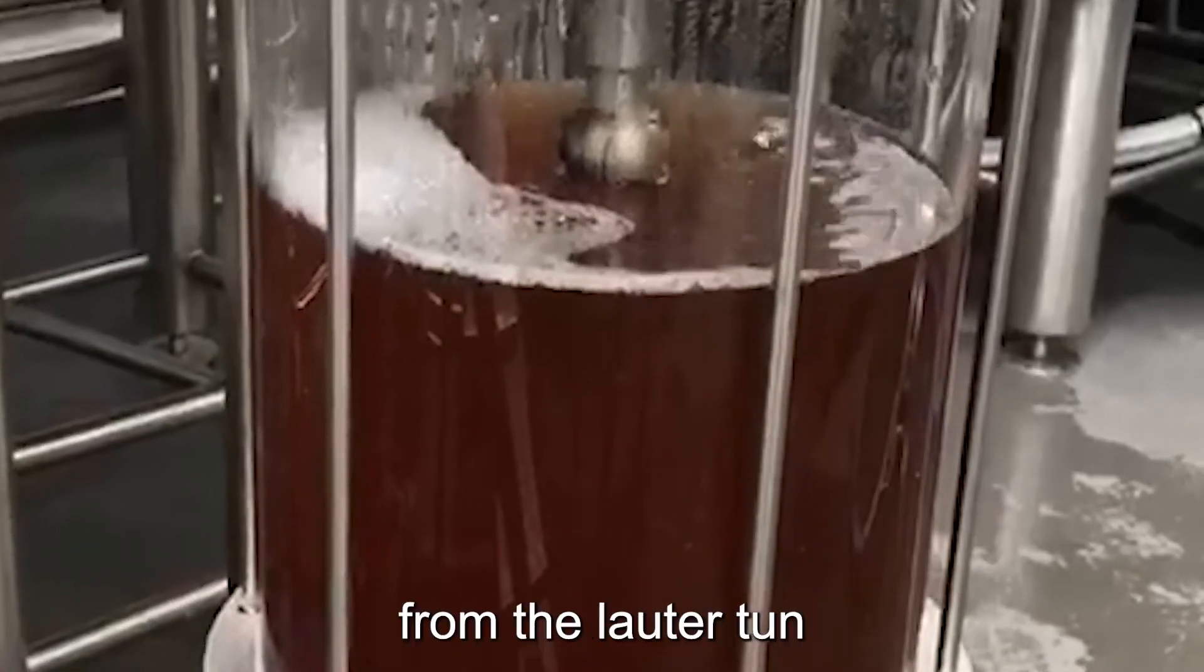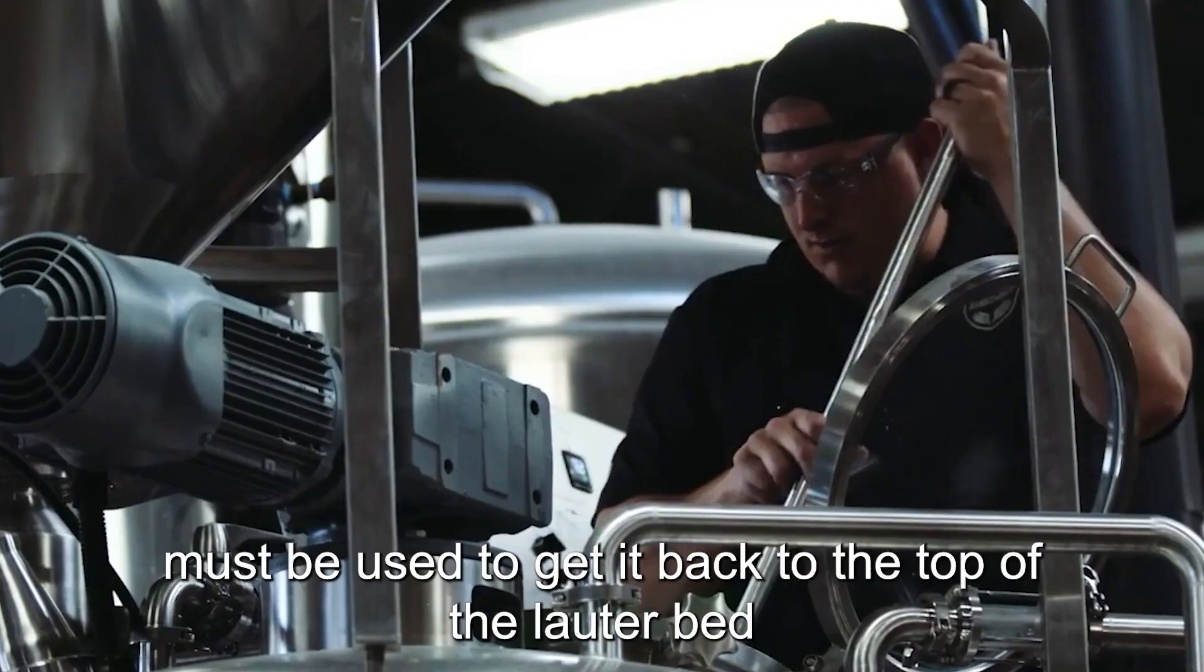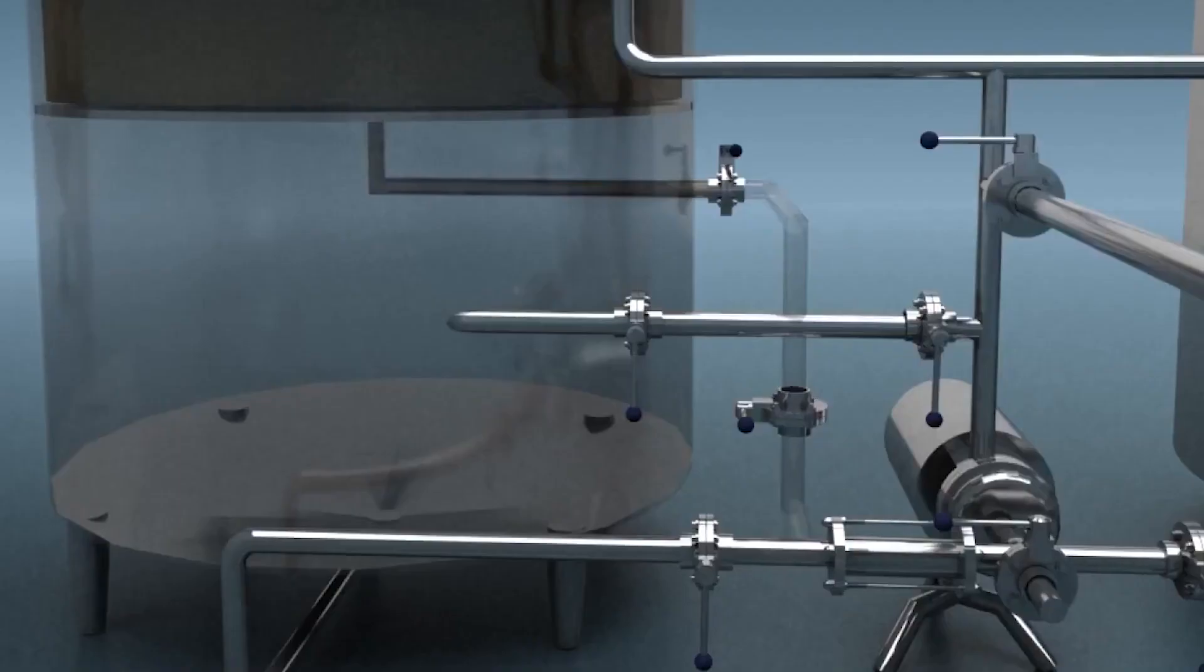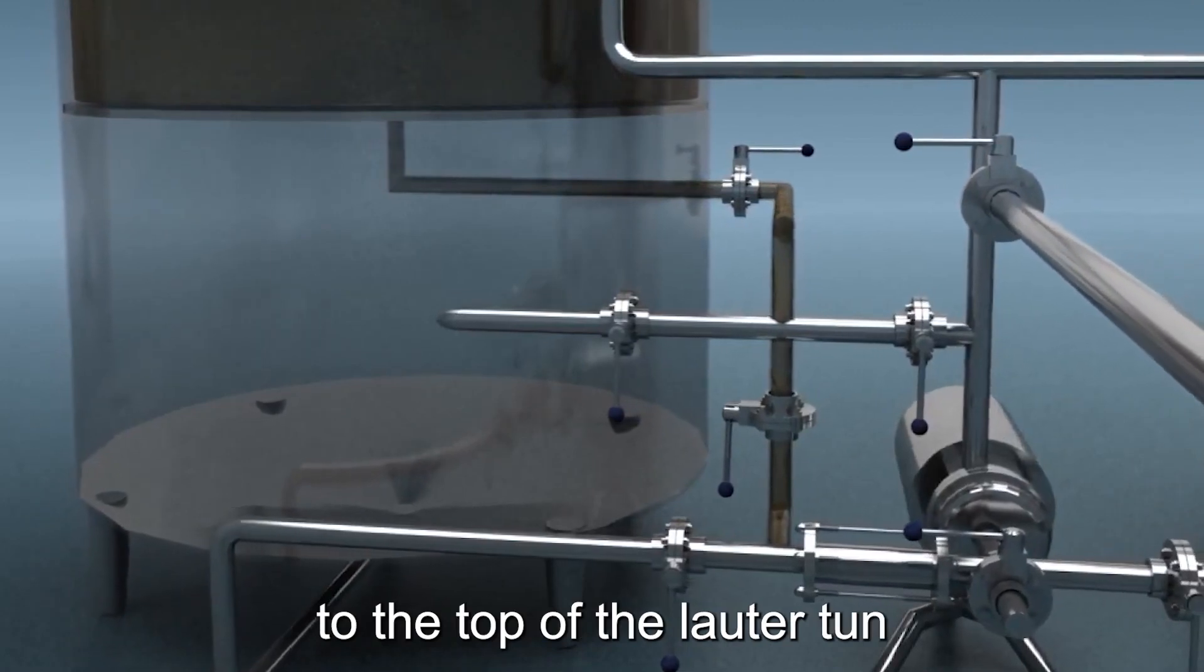While gravity can be used to get the wort from the mash tun to the grant, a centrifugal pump must be used to get it back to the top of the mash bed. This pump delivers wort through an external vorlauff pipe to the top of the mash tun.